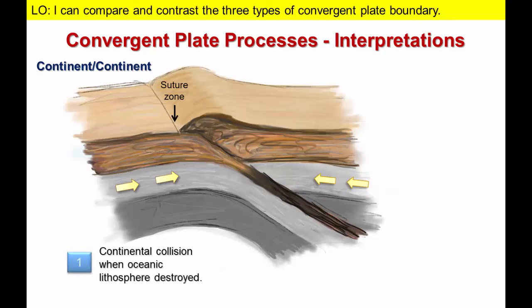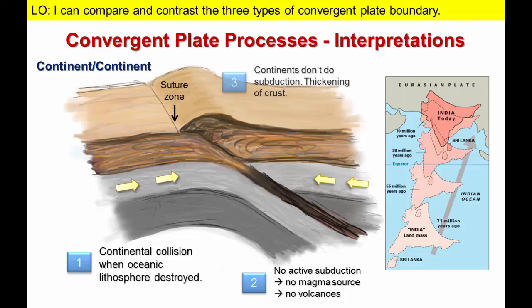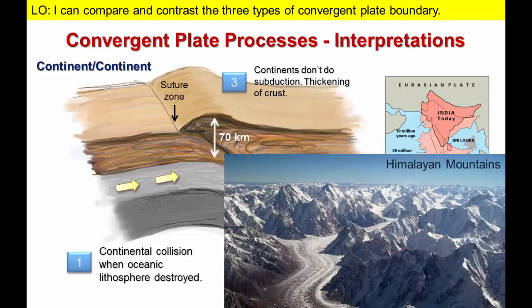The third type of convergent boundary is represented by continent-continent collision. Before the two continents can collide, we have a typical ocean-continent boundary, but eventually the ocean basin is destroyed and the two continents converge. This is the process that occurred before the Indian subcontinent could collide with the rest of Eurasia about 10 million years ago. Continental crust is too buoyant to descend into a subduction zone, so there is no source for magma generation and subsequent volcanism. Instead, the leading edge of each continent stacks up to produce unusually thick continental crust and results in higher elevations, similar to those observed in the Himalaya Mountains today.